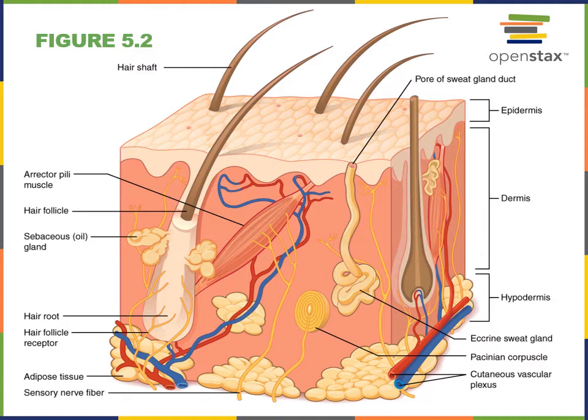The reticular layer, composed of dense irregular connective tissue, provides strong structural support for the cutaneous membrane. Just deep to the dermis, the hypodermis is also known as the superficial fascia, which is a layer of adipose connective tissue — sometimes known as subcutaneous adipose tissue because it is found just deep to the cutaneous membrane. This adipose tissue provides insulation and cushioning and also a route for large blood vessels to travel in.